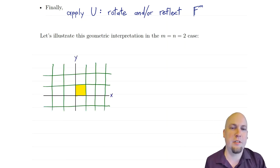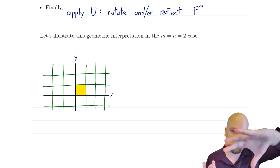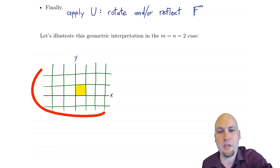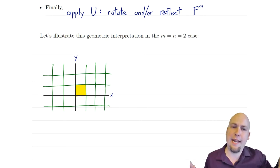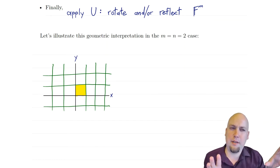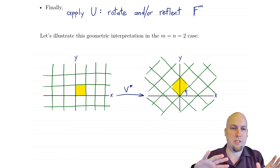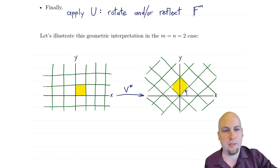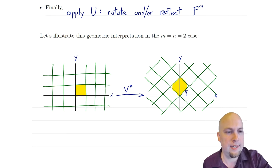Let's try to picture this in the two-dimensional case. The way we draw linear transformations usually is via this sort of unit square grid. So I've drawn R^2 here with x and y axes and the unit square going a distance of one in each axis. The first step of every linear transformation is some rotation — some V* — so I've just taken that unit square grid and rotated it counterclockwise by about 45 degrees.